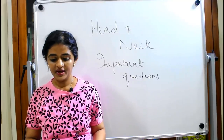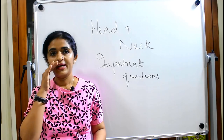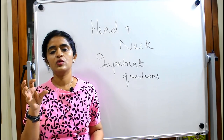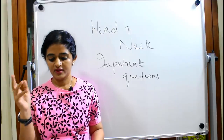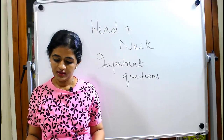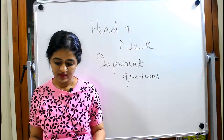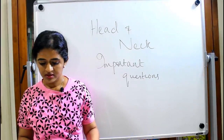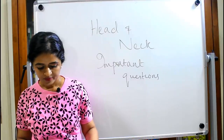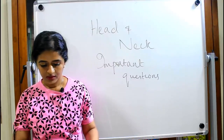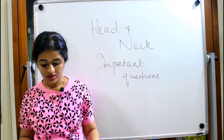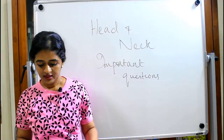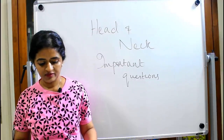Coming to the pharynx and palate: know how the pharynx is divided — nasopharynx, oropharynx, and laryngopharynx. Short notes may be asked on each division separately. Another important question is the Eustachian tube. The constrictor muscles of the pharynx are again a favorite question.